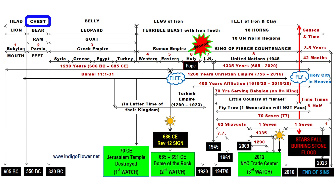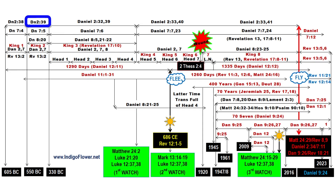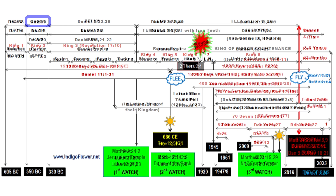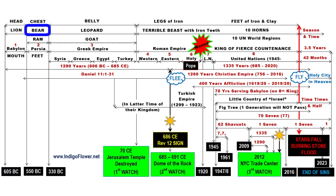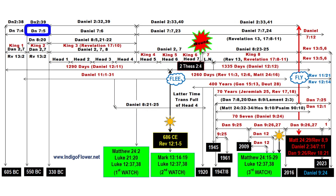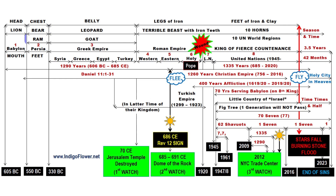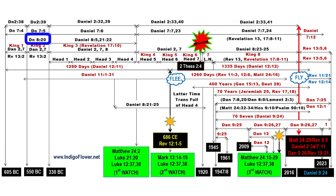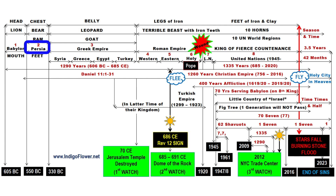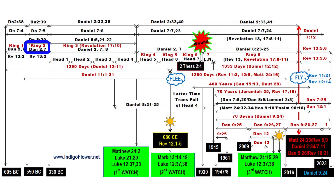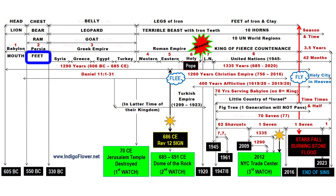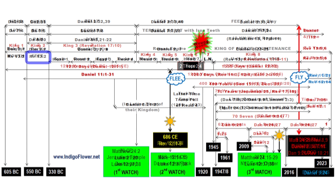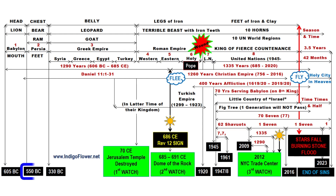Next, the Chest of the image, explained in Daniel 2:32 and 39. That is also the Bear, which is the second beast in Daniel 7:5. And it is also the Ram, explained in Daniel 8 verses 4 and 20. Daniel 8:20 tells us directly that the Ram is Persia, which is the second King in Revelation 17:10, and the Feet of the Beast in Revelation 13:2. The First Persian Empire came to power in 550 BC.